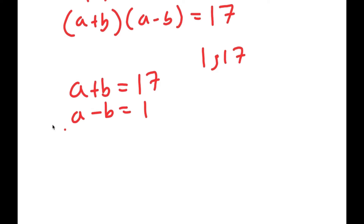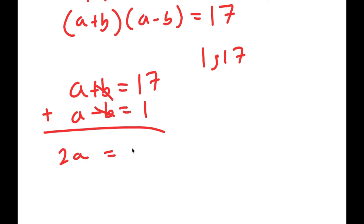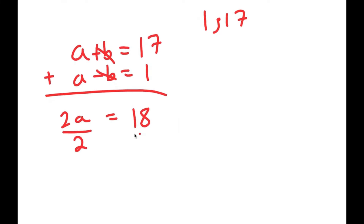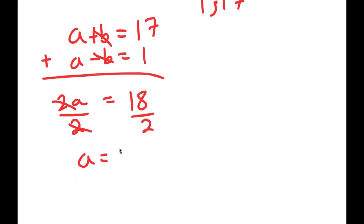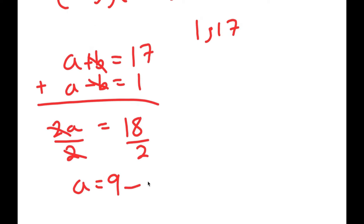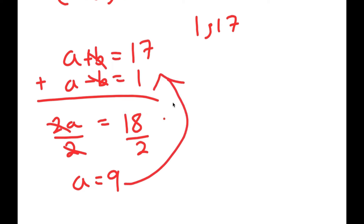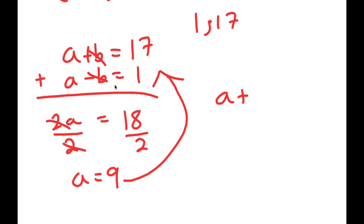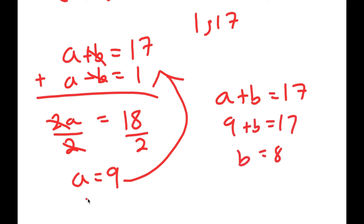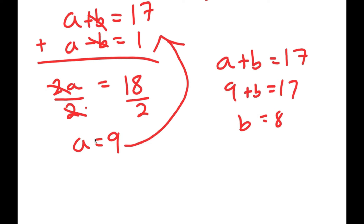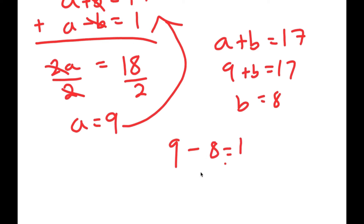I'm going to add these two equations together. a plus a is 2a, b minus b cancels out, and 17 plus 1 is 18. So I get 2a equals 18, and dividing both sides by 2 gives a is equal to 9. Plugging a equals 9 back into a plus b equals 17, I get 9 plus b equals 17, meaning b is equal to 8. So a equals 9 and b equals 8. We can verify: 9 minus 8 equals 1, which checks out.